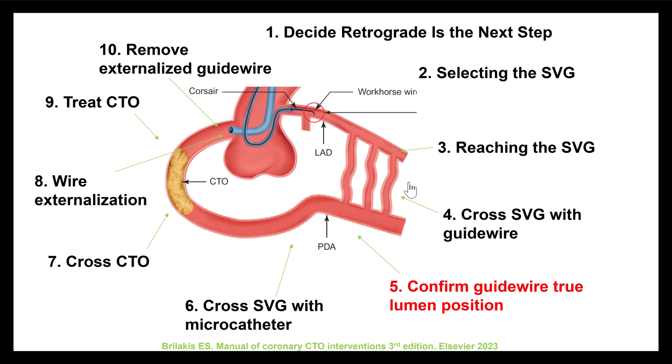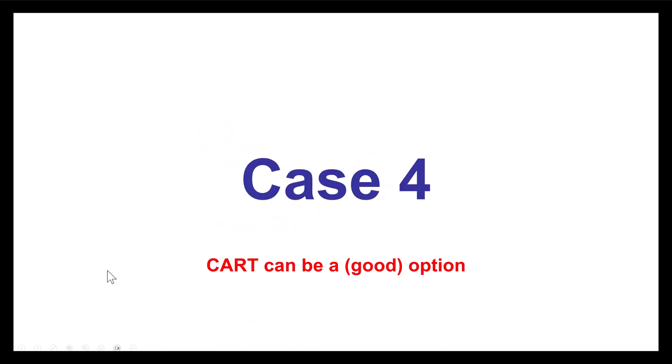Step number five is to confirm that the guide wire is through the true lumen — this is the same for every retrograde approach — and then crossing with the microcatheter, which is done in a standard way. Vein grafts are relatively easy to cross as they are larger than epicardial and septal collaterals. Step number seven is to cross the actual CTO. One thing slightly different for vein grafts is the CART technique — inflating a retrograde balloon and crossing into the distal true lumen with an antegrade wire — which can be a good option because vein grafts usually have a large lumen.